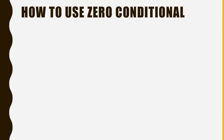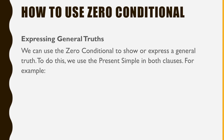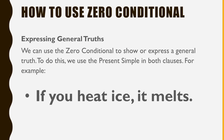How to use zero conditional? Expressing general truths. We can use the zero conditional to show or express a general truth. To do this, we use the present simple in both clauses. For example, if you heat ice, it melts.